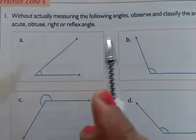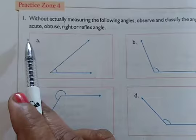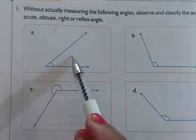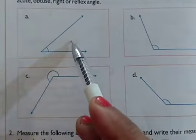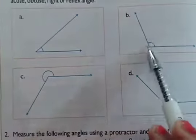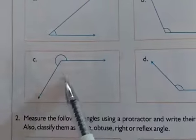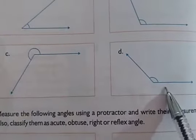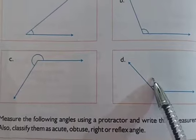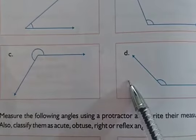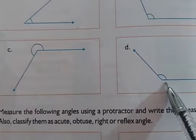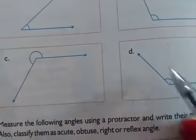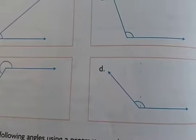Let's do practice zone 4 — without actually measuring, observe and classify the angles as acute, obtuse, right, or reflex. This angle is more than 0 but less than 90 degrees, so it is an acute angle. This one is more than 90 degrees, so it is an obtuse angle. This angle is greater than 180 but less than 360 degrees — this is a reflex angle. And this angle, greater than 90 but less than 180 degrees, is an obtuse angle.